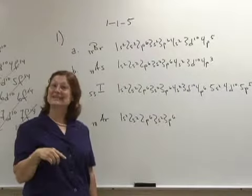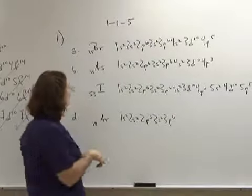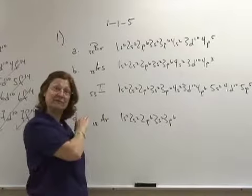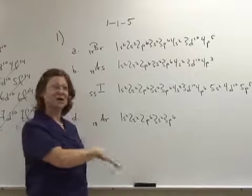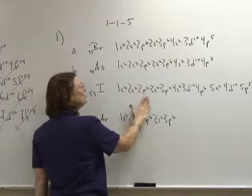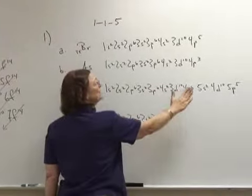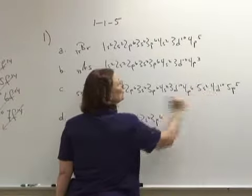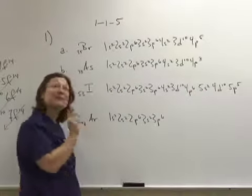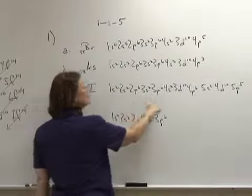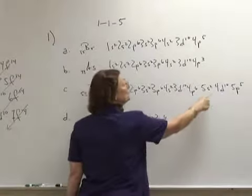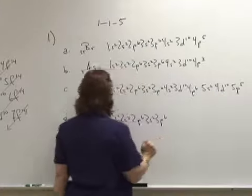I just keep going until I get to the number of electrons that I need. Iodine is atomic number 53. I follow my diagonal rule and I never go wrong. 1s2, 2s2, 2p6, 3s2, 3p6, 4s2, 3d10, 4p6, 5s2, 4d10 and 5p5. And I add those numbers up, I get 53. 2, 4, 10, 12, 18, 20, 36, 38, 48 and 5 is 53.